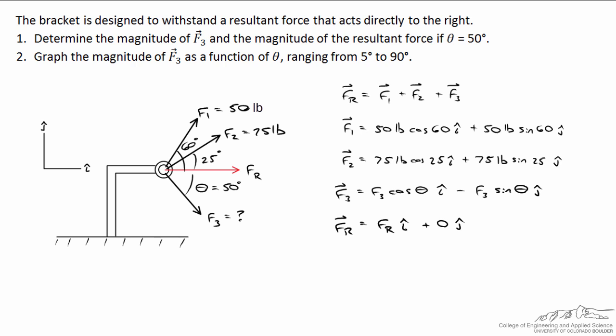Now what I'm going to do is write two different equations based on the magnitudes of the vectors in the horizontal direction. The sum of these three terms will equal the magnitude of the resultant force, and my second equation, the sum of the three vertical components, will have to equal zero because we know our resultant force must act to the right. I'll use the label i hat to indicate my first equation. So I've got 50 pounds times the cosine of 60 degrees, plus 75 pounds times the cosine of 25 degrees, plus F3 times the cosine of theta, and the sum of all three of these will equal the magnitude of the resultant force. I'll do the same thing for the j hat direction. The sum of these three terms has to equal zero because it acts only horizontally.